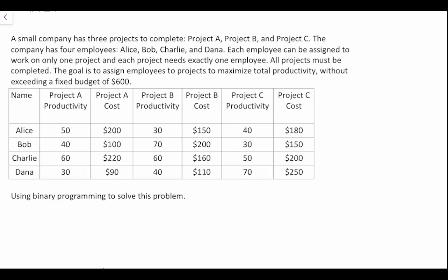Here's our question: a small company has three projects to complete, project A, project B, and project C. The company has four employees: Alice, Bob, Charlie, and Dana. Each employee can be assigned to work only one project, and each project needs exactly one employee. All projects must be completed.